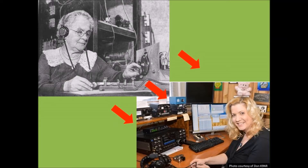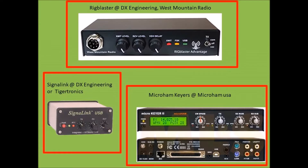Today we're going to talk about bringing your station to the 21st century and interfacing your rig with your computer. First, you're going to need some kind of digital interface. These are the three most popular: your Signal Link, your Rig Blaster, or your Micro Ham product.